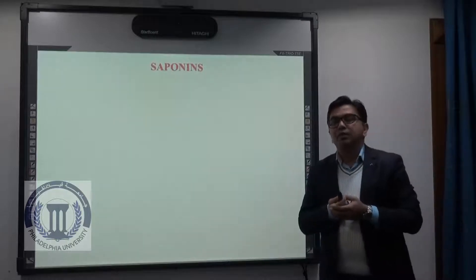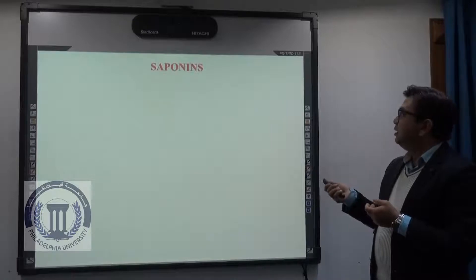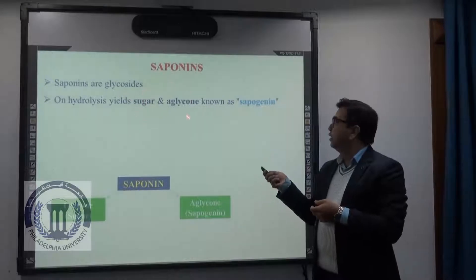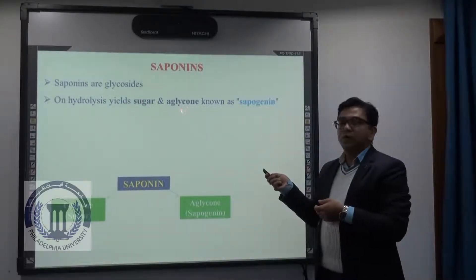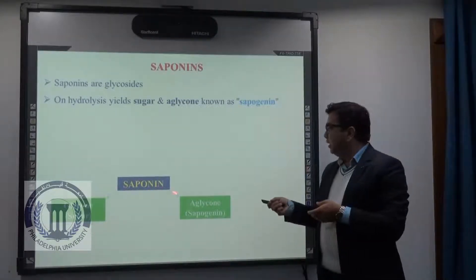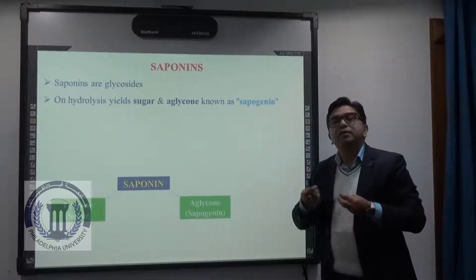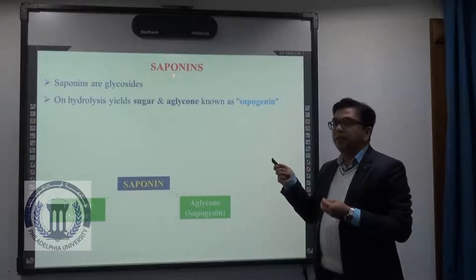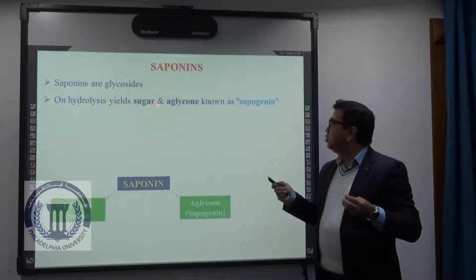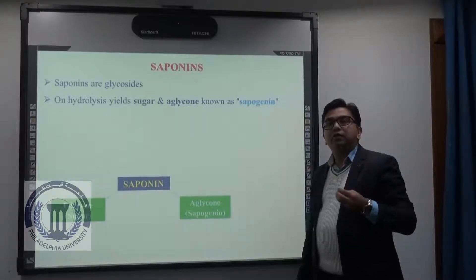First, coming to the definition of saponins — what are saponins? Saponins are a class of glycosides which upon hydrolysis yield a sugar and a glycon part that is non-sugar, also known as sapogenine. Don't get confused with the terms saponin and sapogenine. Saponin represents the glycoside which upon hydrolysis yields sugar and a non-sugar part, whereas sapogenine is the non-sugar part of the saponin.